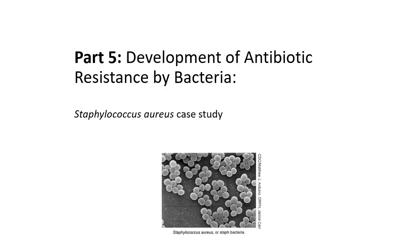Part five of this lecture is really to think in detail about how bacteria evolve resistance to antibiotics. I want to understand this both at a whole cell level and then drill down into a molecular understanding of how resistance comes about. We will look at Staphylococcus aureus as a case study, with the fairly famous — or infamous — methicillin-resistant Staphylococcus aureus as a good story to examine.